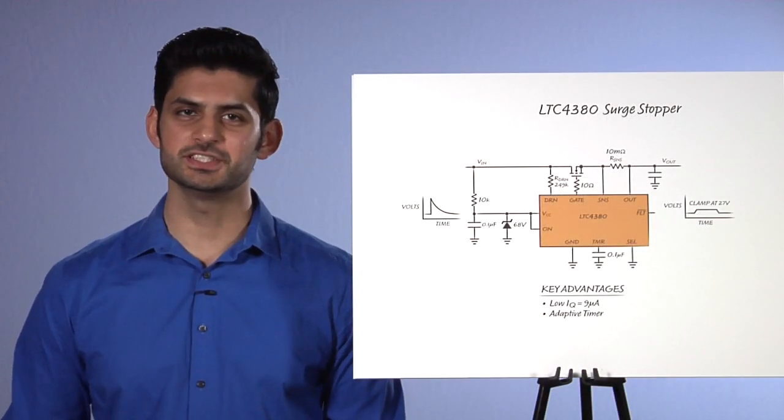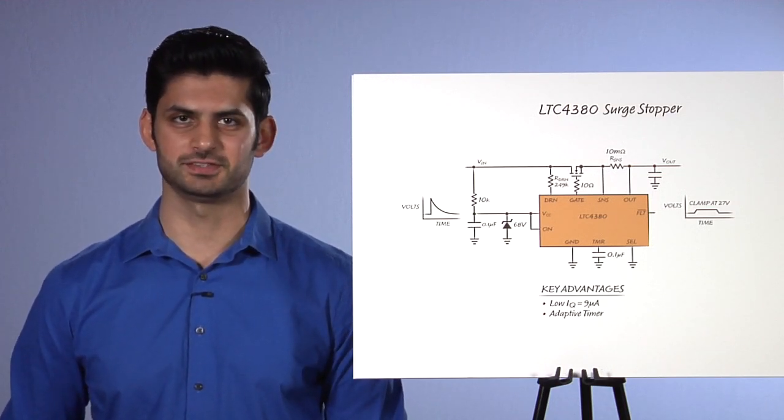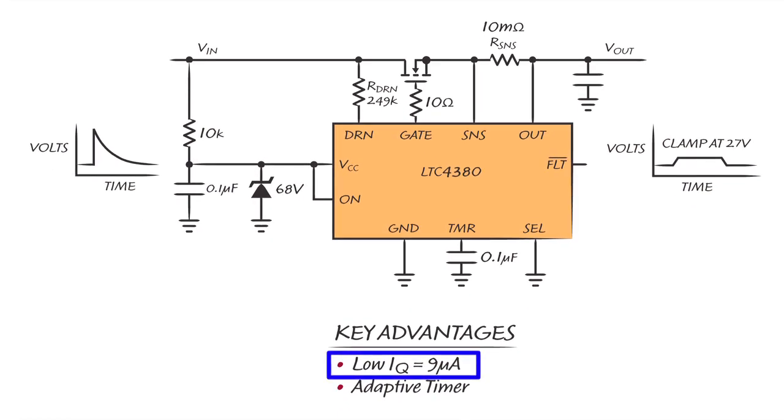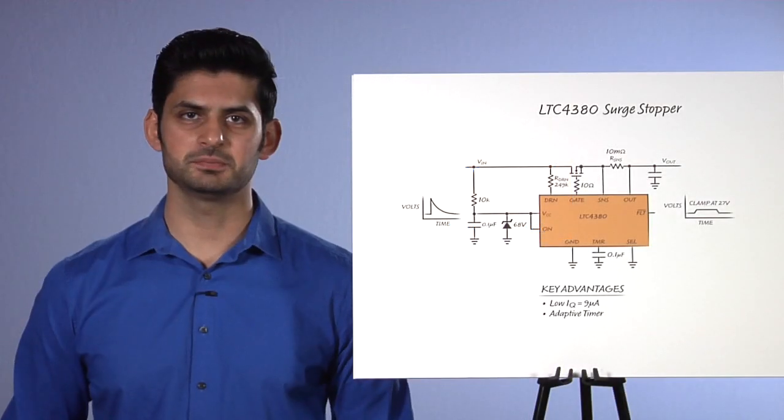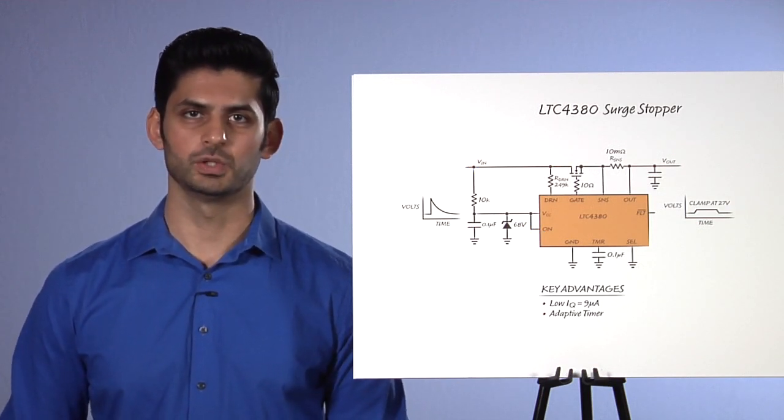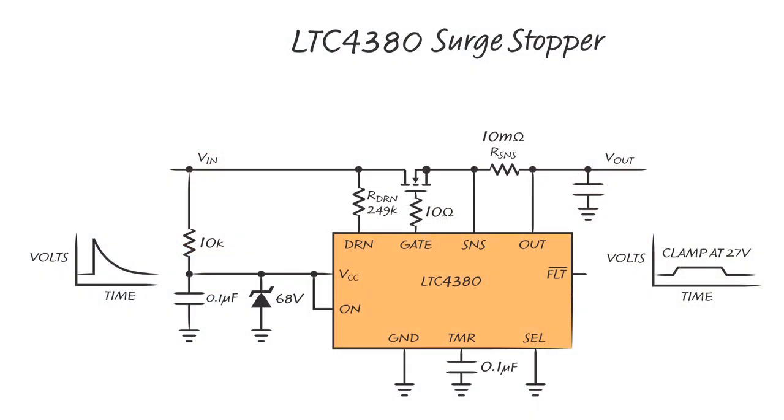The LTC4380 is the most recent addition to the surge stopper line and brings two exciting improvements over its predecessors. One, it's fully functional at a quiescent current of just nine microamps. The current is further reduced to five microamps during shutdown. This makes it the ideal protection device for rugged, higher reliability systems, which always need to be on battery standby. The added benefit of this low supply current is that an RC filter of reasonable value on the VCC pin can supply power to the part during events where the voltage drops momentarily below the operating level of the IC.